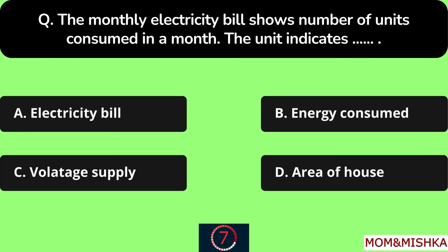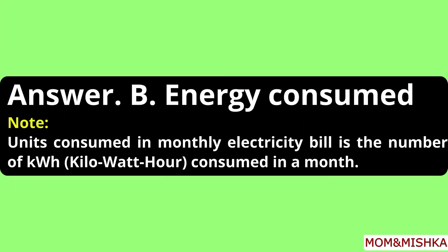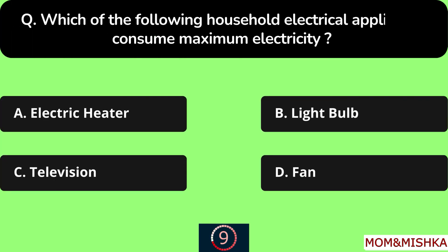The monthly electricity bill shows the number of units consumed in a month. The unit indicates energy consumed, option B. The units consumed in a monthly electricity bill is the number of kilowatt-hours consumed in a month. Which of the following household electrical appliances consumes maximum electricity?